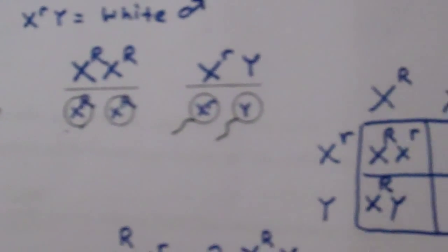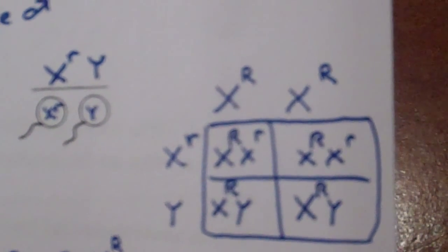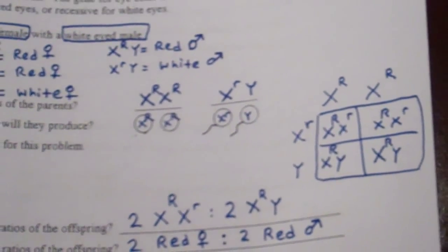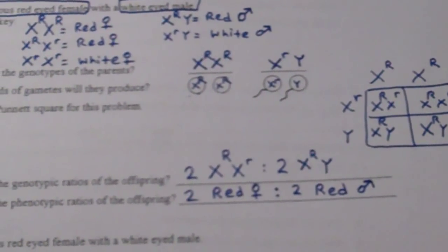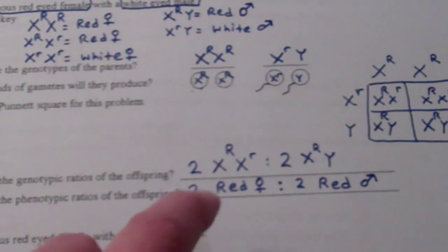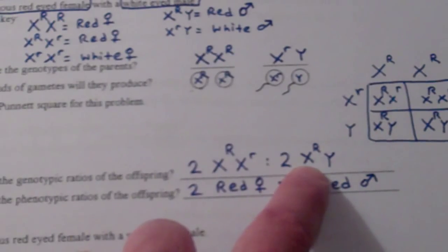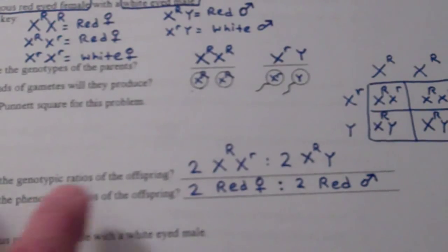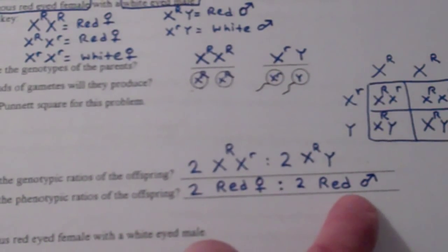Here's my Punnett square — you can pause and fill it in if you need to. My genotypic ratio: I've got two X^R X^r to two X^R Y. My phenotypic ratio — what they look like — is two red-eyed females to two red-eyed males.